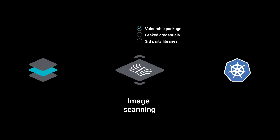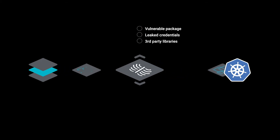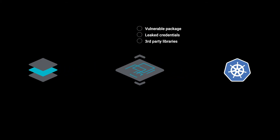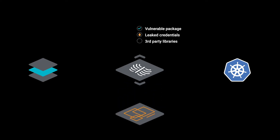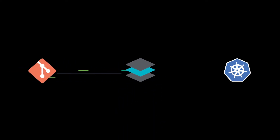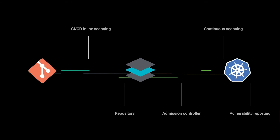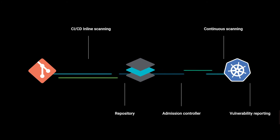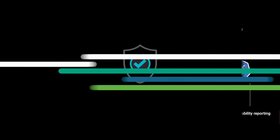With image scanning you can block vulnerabilities before they reach production. Sysdig scans for vulnerable packages, leaked credentials, language-specific libraries, and much more, and can be implemented in several points of the DevOps lifecycle.